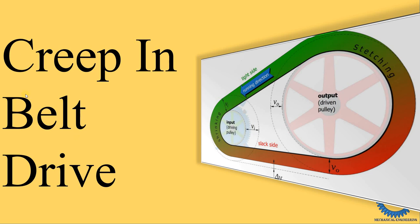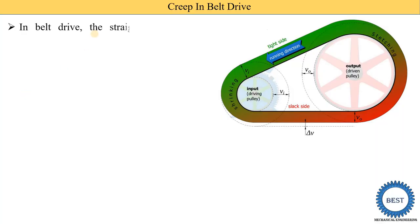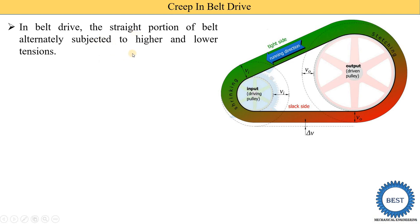In this video, I explain creep in belt drive. In a belt drive, the straight portion of the belt is alternatively subjected to higher and lower tension. As seen in this diagram, this is a driving pulley rotating anti-clockwise, and this is a driven pulley. This is the tight side of the belt drive with higher tension T1, and this is the slack side with lower tension T2.